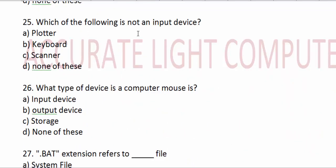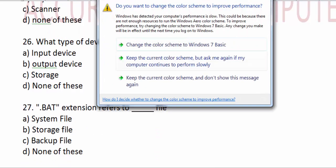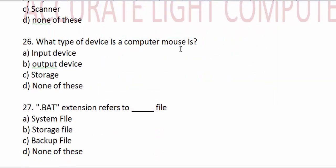Which of the following is not an input device? A plotter is an output device. What type of device is a computer mouse? It is an input device.